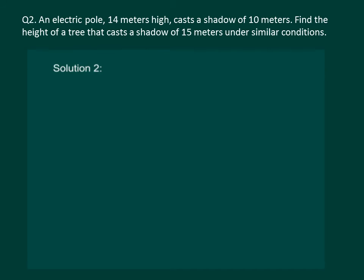Let us read the question on the slide. An electric pole 14 meters high cast a shadow of 10 meters. Find the height of a tree that cast a shadow of 15 meters under similar conditions. Note that in this question we have two variables the height of the object and length of the shadow. And we also know that the more the height of an object then more is the length of the shadow. That means we can use the concept of direct proportion for this question.